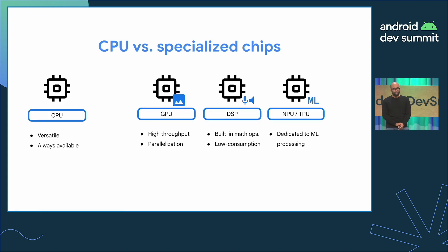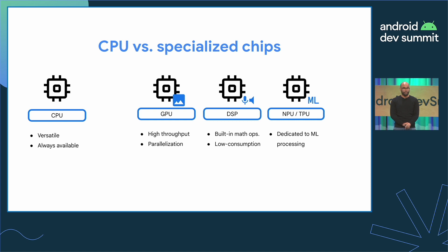To summarize: the CPU isn't always the only processing unit available on a mobile device. Depending on your model characteristics, you can use a GPU or a DSP, or if the device has one, use NPU or TPU chips to offload the computing load from your CPU and accelerate inference.